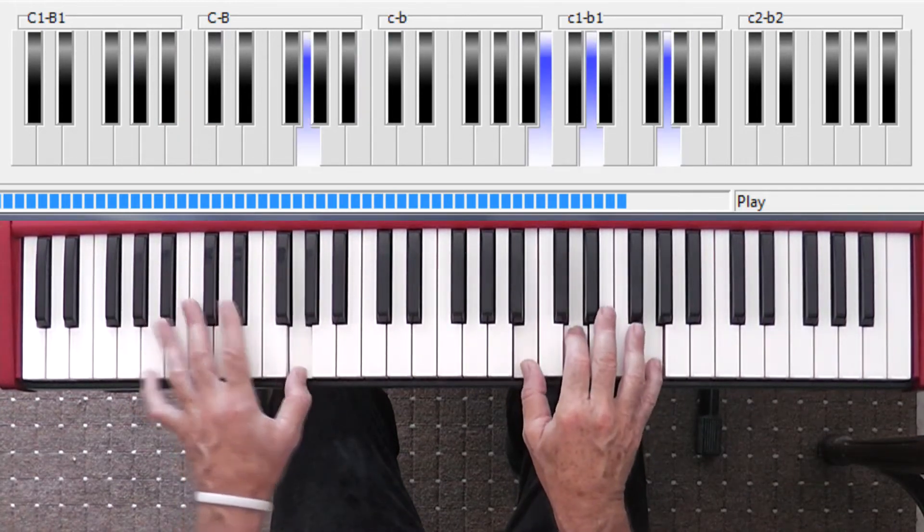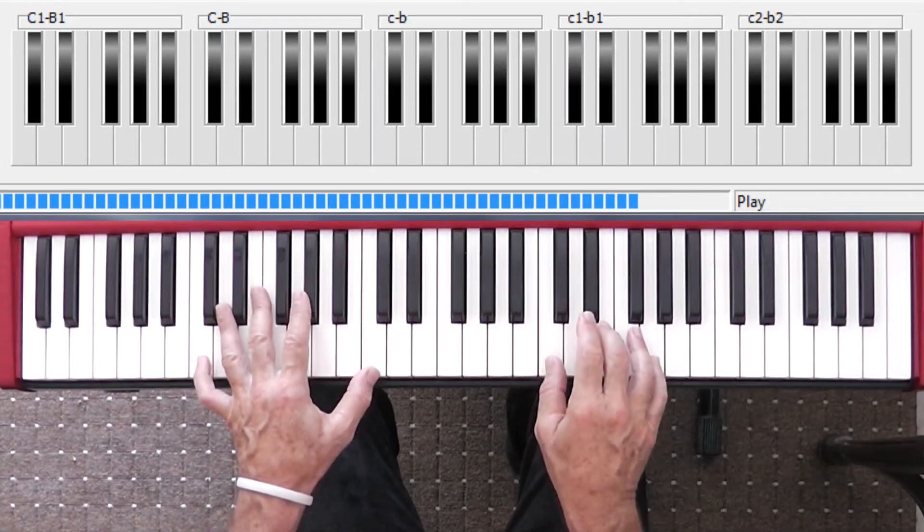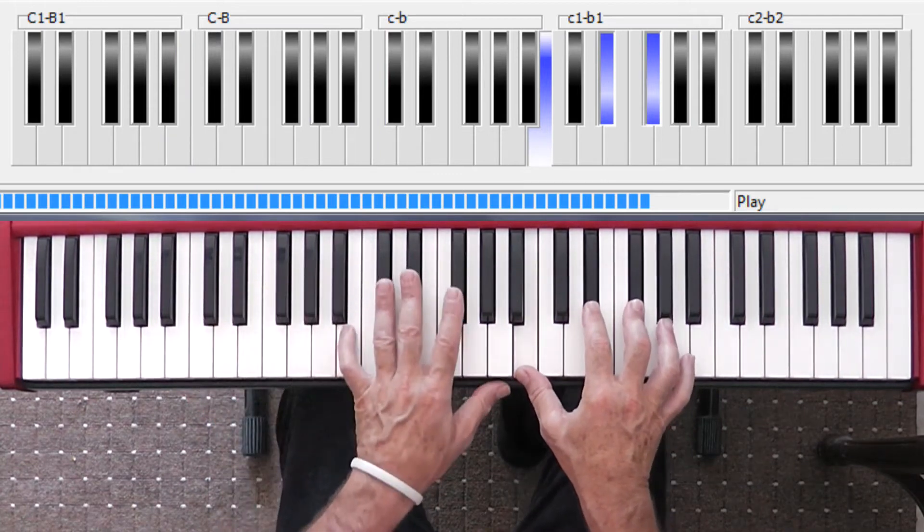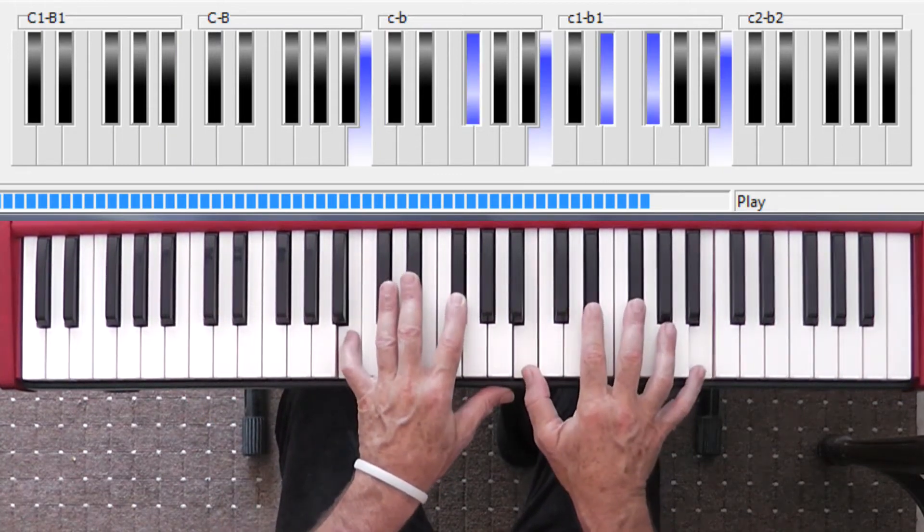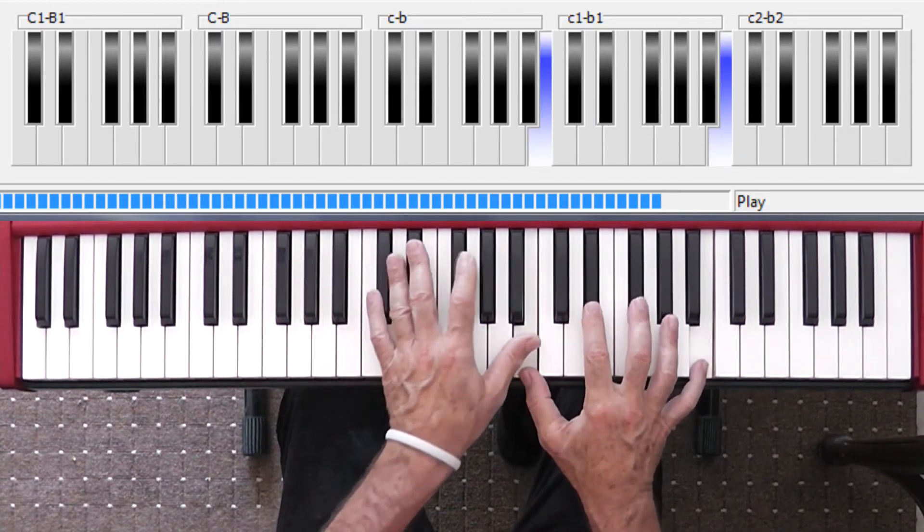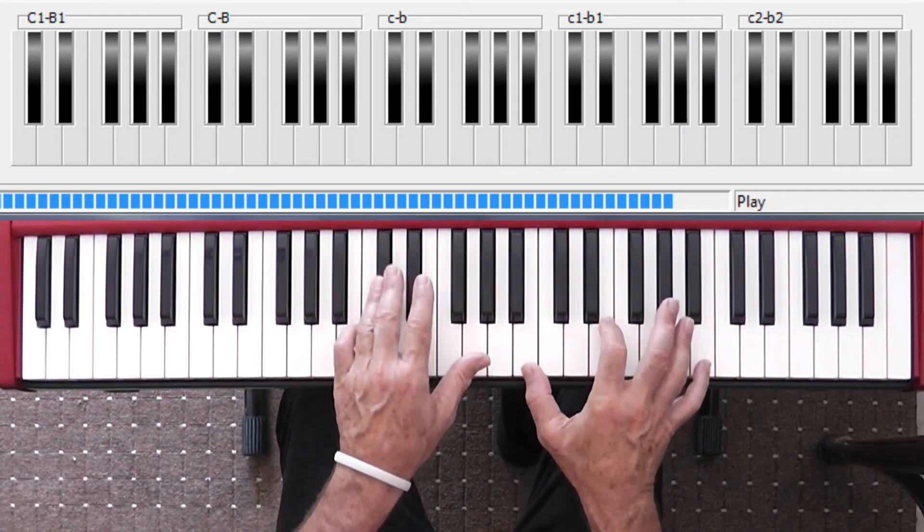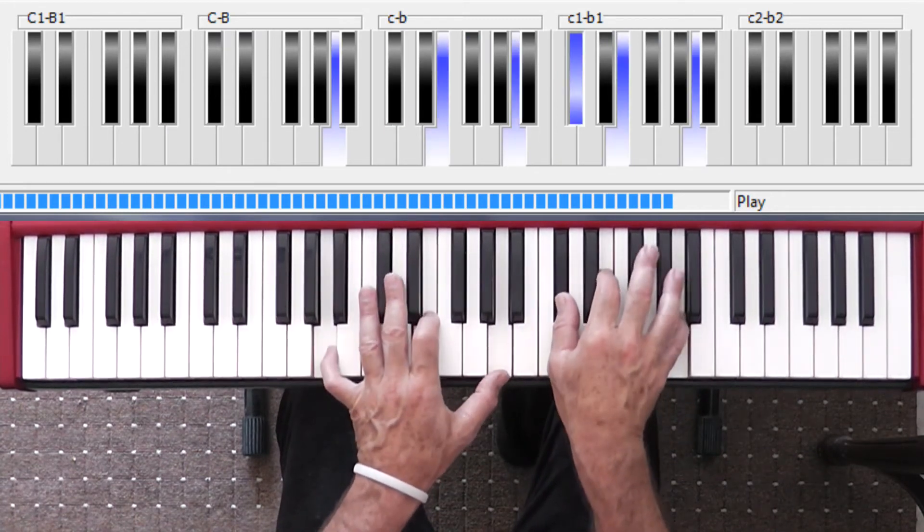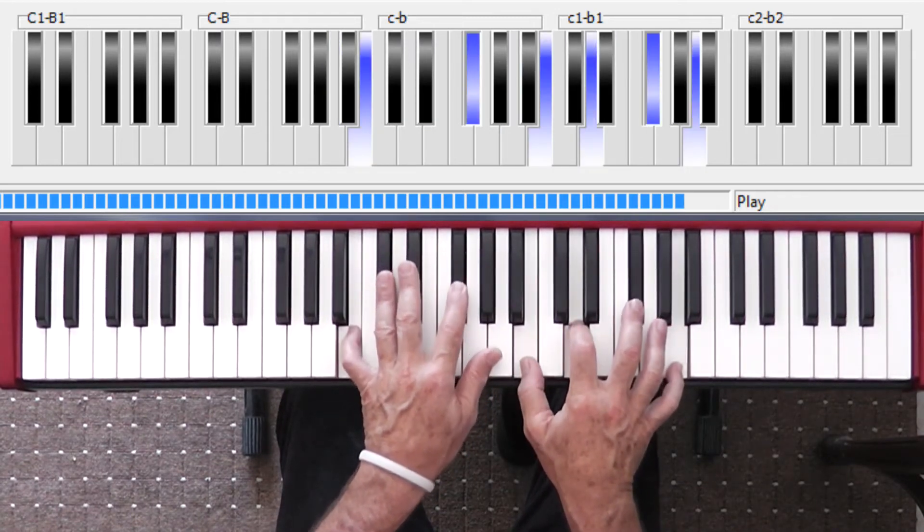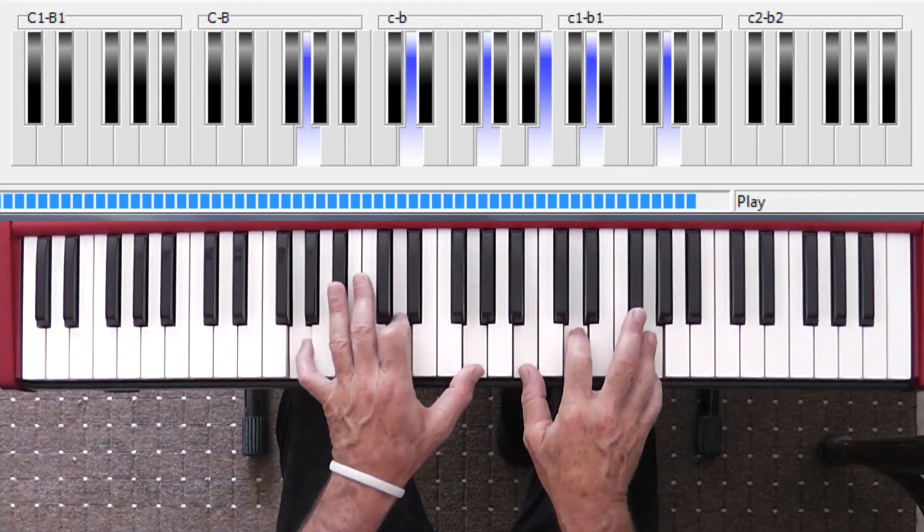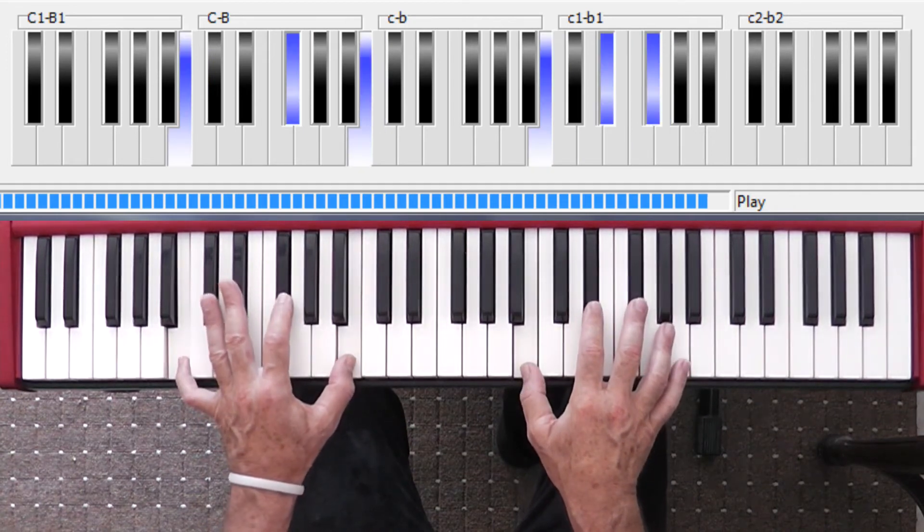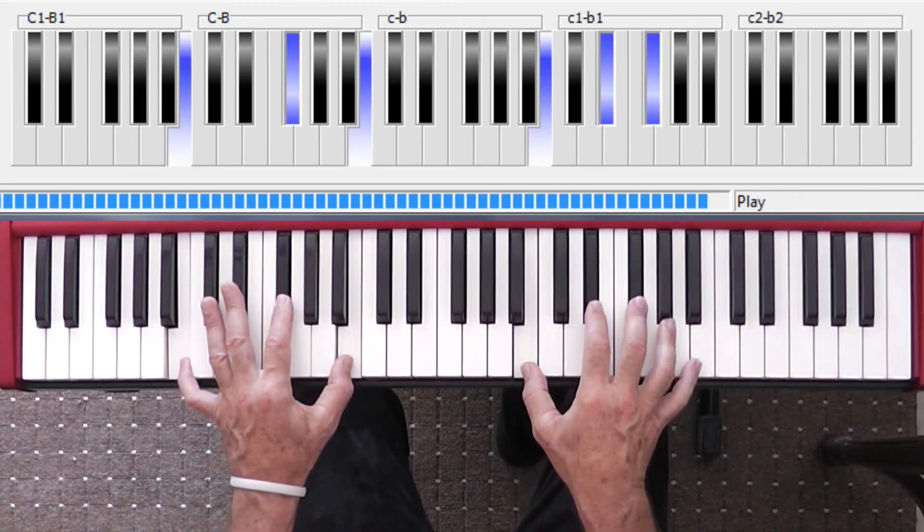They all could be California girls. So can you hear how nice those inversions are, the leading notes? I wish they all. In other words, that note, wish they all could be, stays the same. California, now it drops to the A. Stays the same for the B minor. Drops for the G. Stays the same for the C. Drops for the B. And that's why I want you to use those inversions.